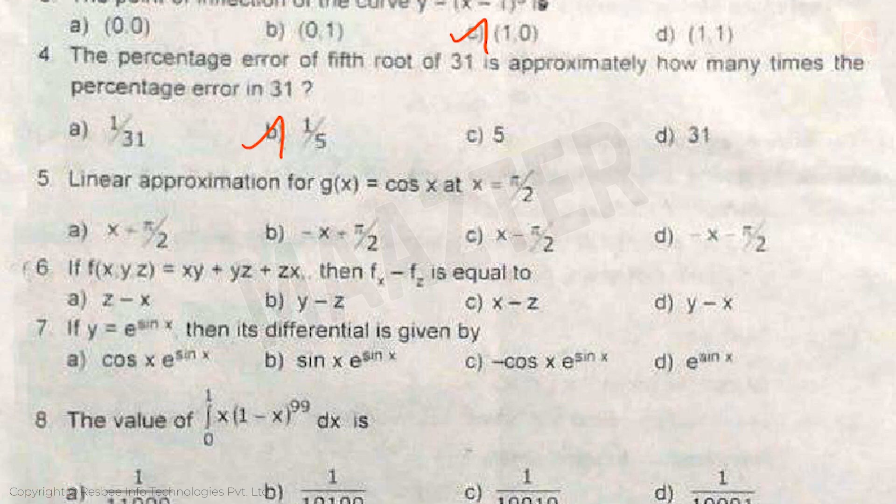Question 5: Linear approximation for g(x) = cos x at x = π/2 is... Answer is option B.